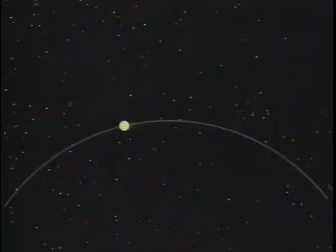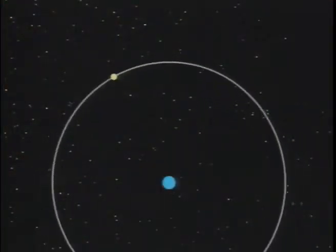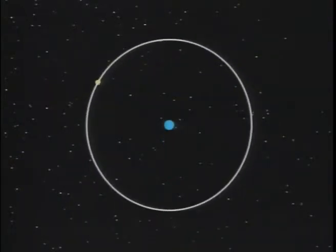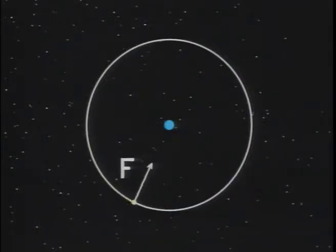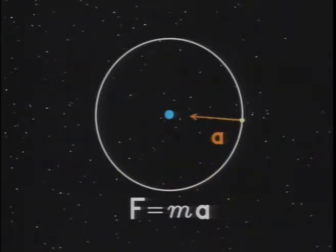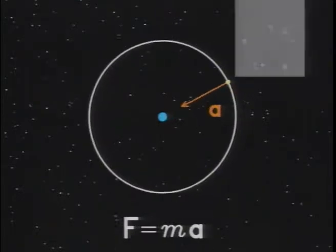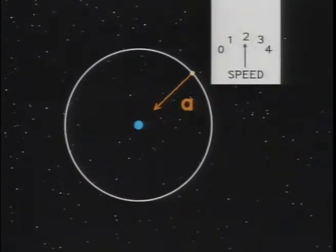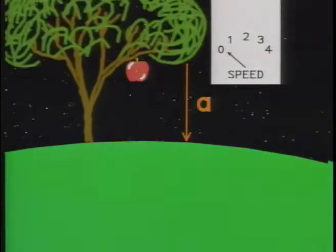Starting with his theory of the moon. The moon's always falling, yet it stays in the sky. The gravitational force from the earth makes the moon accelerate according to F equals ma. Although it continues to accelerate all of the time, it moves at nearly constant speed. This seems to contradict the very concept of acceleration.